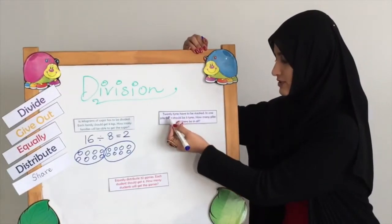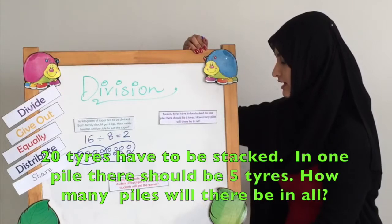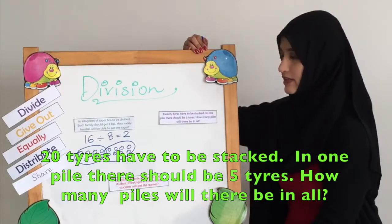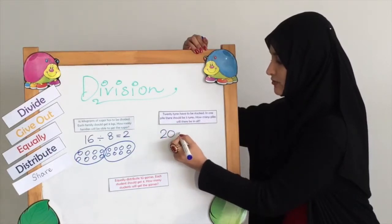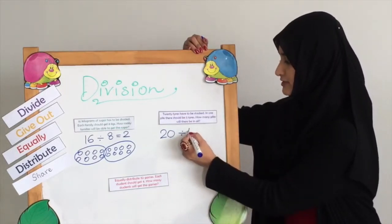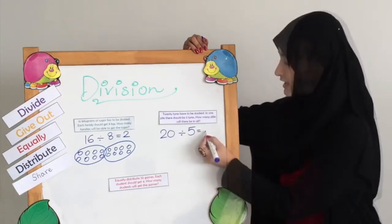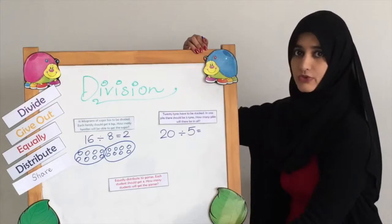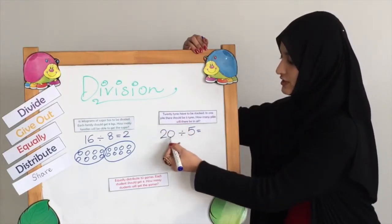The second question: 20 tires have to be stacked. In one pile there should be 5 tires. How many piles will there be in all? We have 20 tires and we need to pile them so that each pile has 5 tires — that's again the set size. We need to find out how many piles there are going to be in all.